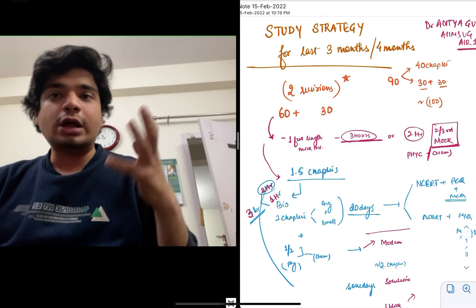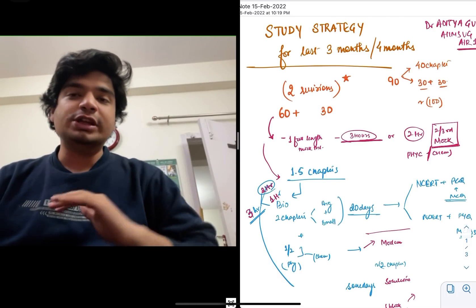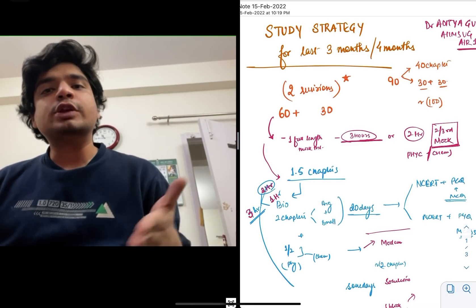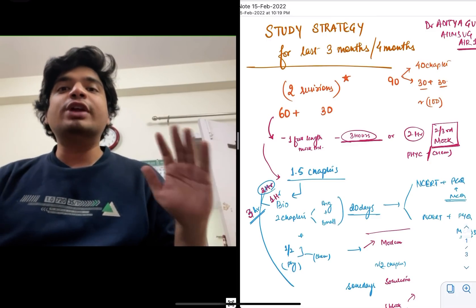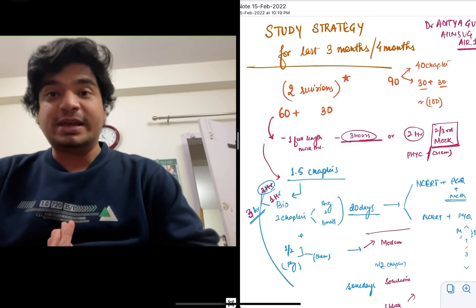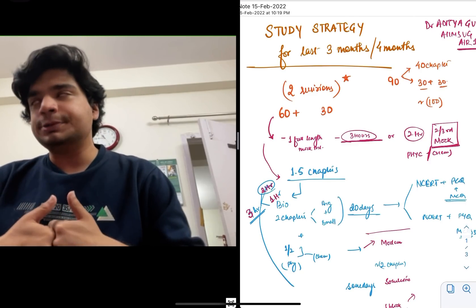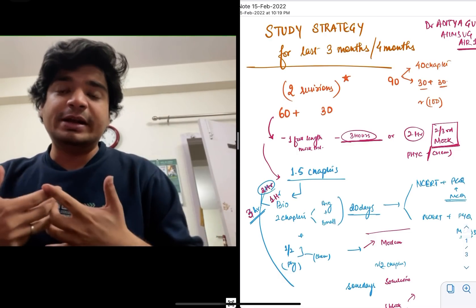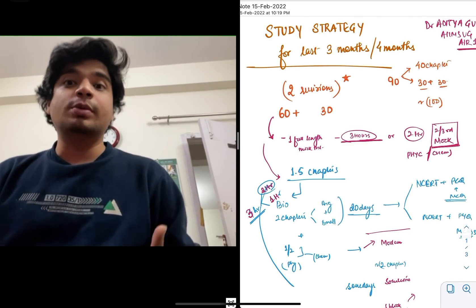In this video, we'll be talking about how do you study in the last three months before your NEET UG examination. So let's assume your NEET UG examination is going to happen between May 20th to May 31st or in the first week of June. So you roughly have at this point of time, if I'm making this video on 15th of February, you roughly have around three to three and a half months or on the higher side, if it gets a bit delayed, four months to prepare for your examination. How do you revise? How do you go about this?